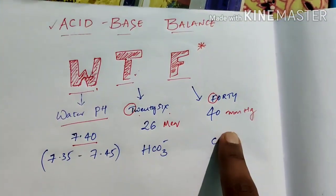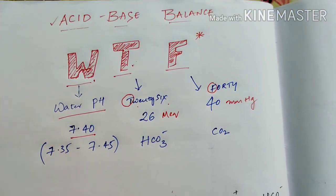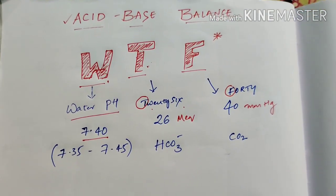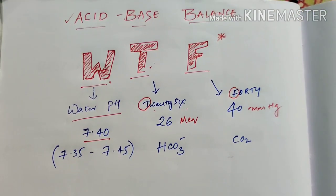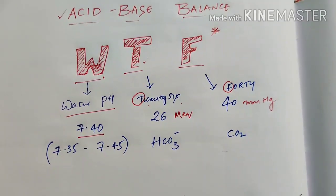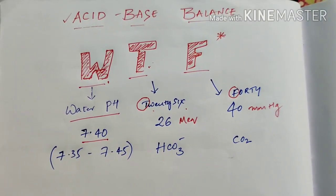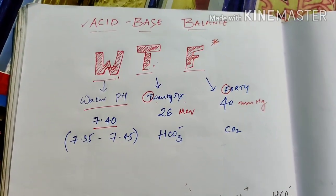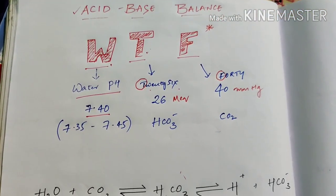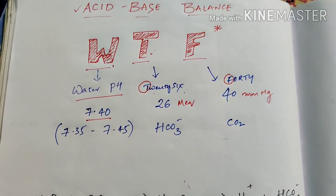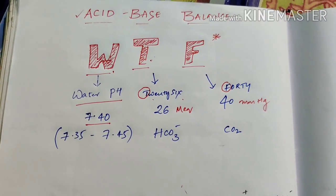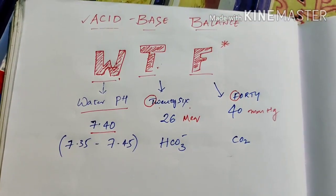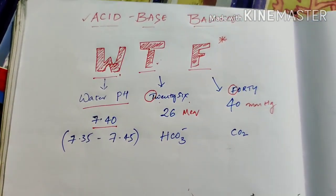Now what is the basic concept behind acid-base balance? Think of it like this: in your life you'll have a best friend, and whatever you both do, you do silently together. The same thing happens in our body — for the kidney it is the lungs, and for the lungs it is the kidney. They are best friends forever; whatever happens, they compensate each other.